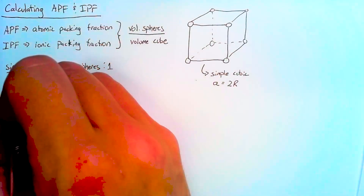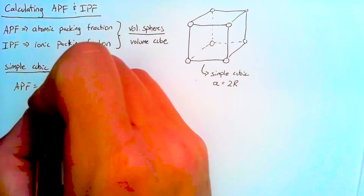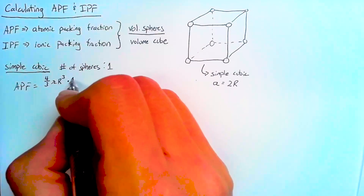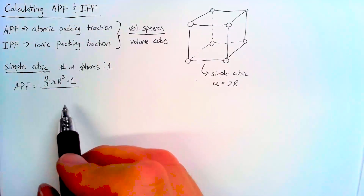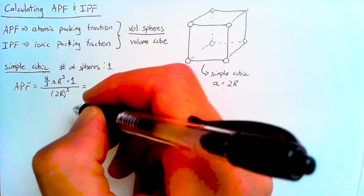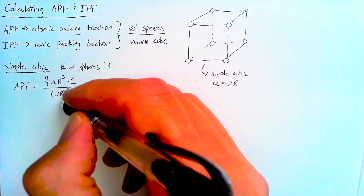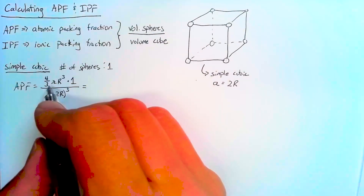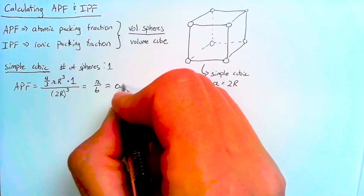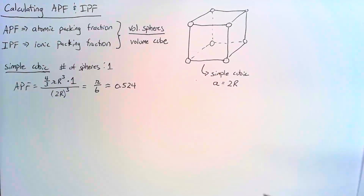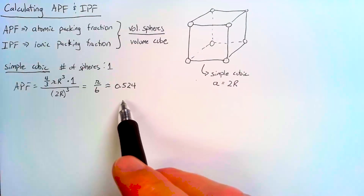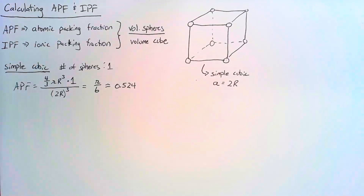To calculate the APF, we take the volume of one sphere — four-thirds pi r cubed — multiply by the number of spheres (one), and divide by A cubed, which is (2r) cubed. The r's cancel out, and we end up with four-thirds pi divided by eight, which is pi over six. This comes out to 0.524, so a simple cubic lattice has a packing fraction of about 52%.